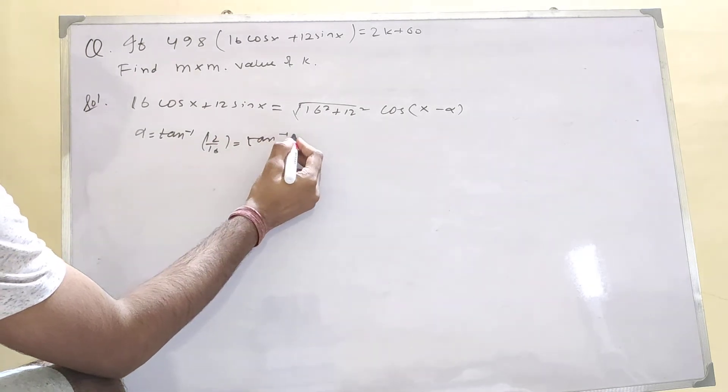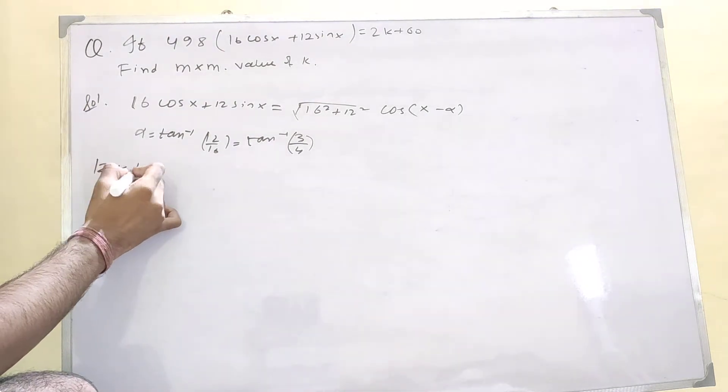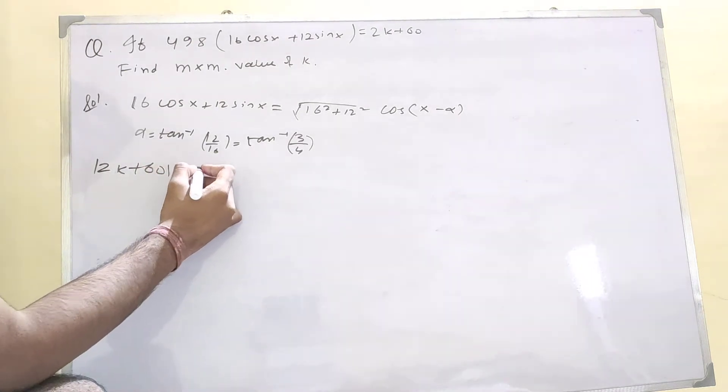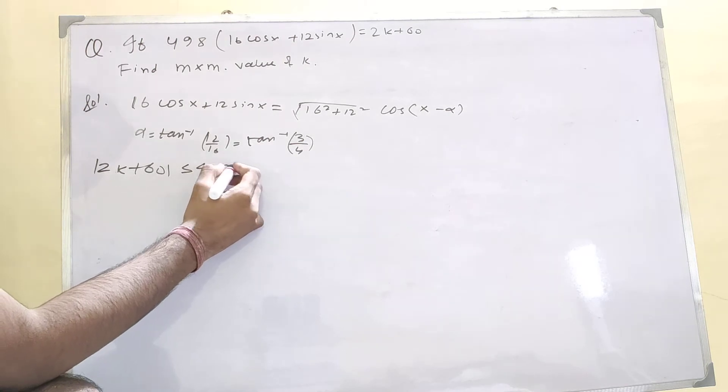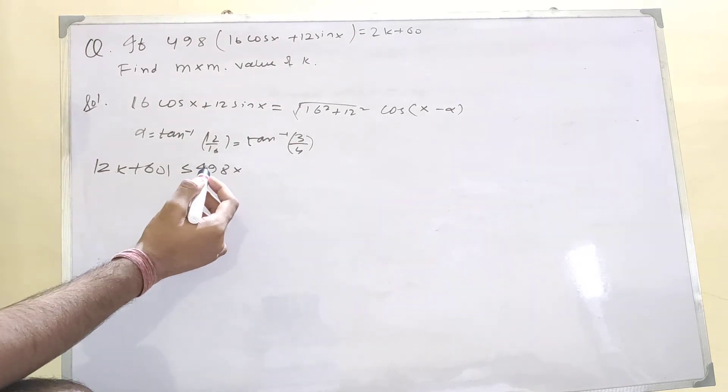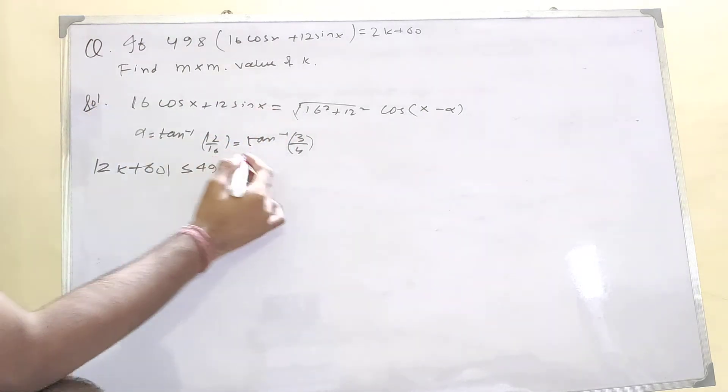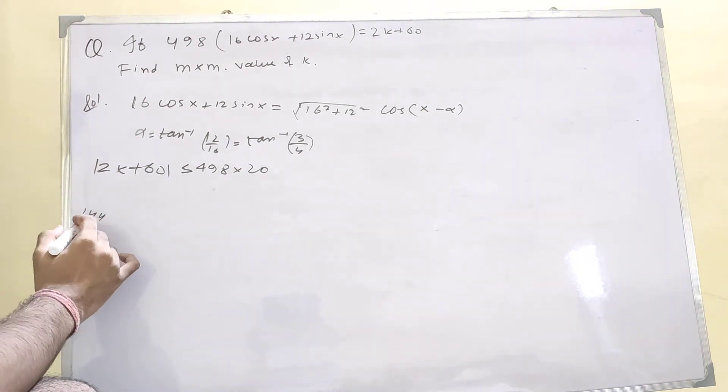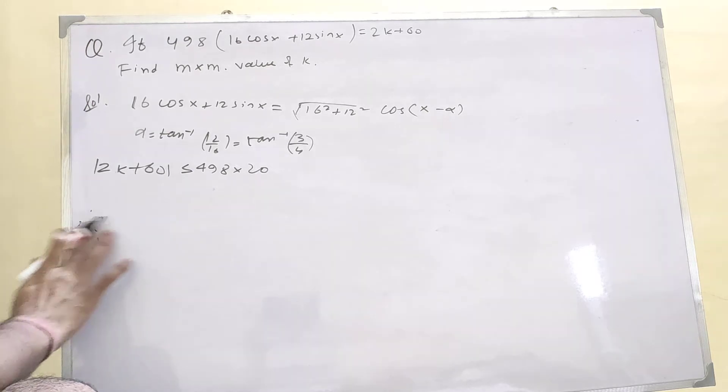So 2k plus 60 is less than or equal to 498 into this. What is this? I think it's 20. 144 and 256... yeah it's 400, so square root of 400 is 20.